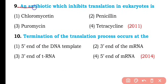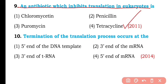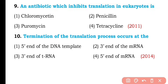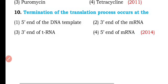Question number nine. An antibiotic which inhibits translation in eukaryotes is: chloromycetin, penicillin, puromycin, or tetracycline? So the correct answer is option four — tetracycline inhibits translation in eukaryotes.